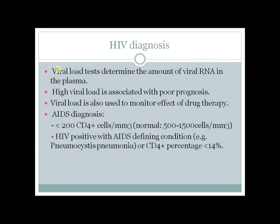Another test is the viral load test, which determines the amount of viral RNA. It is a very important indicator of prognosis — if the viral load is high, the prognosis will be bad. It can also be used to monitor drug therapy effectiveness. To diagnose AIDS, the main criteria are a low CD4-positive cell count, which is less than 200 per cubic millimeter of blood (normal is 500–1500).